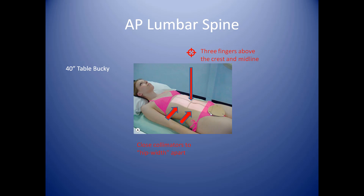These are lead protective covers — the patient's gonads are covered appropriately. Sometimes you want to avoid putting an apron over them because less experienced operators will accidentally cover up the anatomy and you'll have to repeat the film. A good baseline technique for this examination is 35 mAs at 75 kVp. Remember, that is not a guaranteed perfect image — it's just a good baseline technique to work from and grow your techniques.